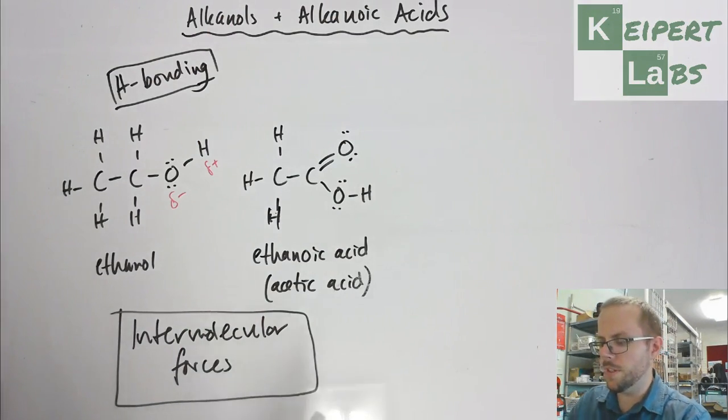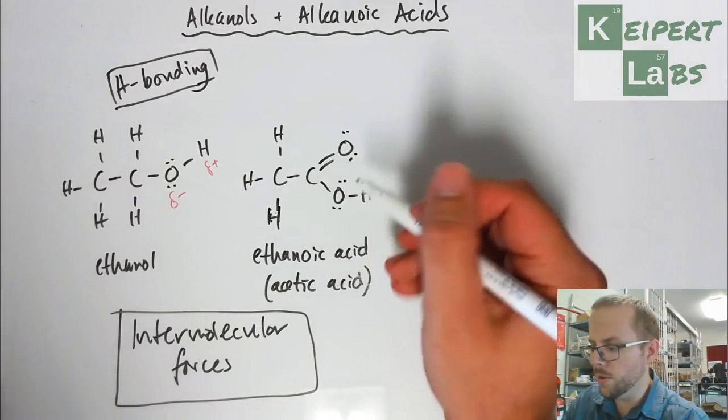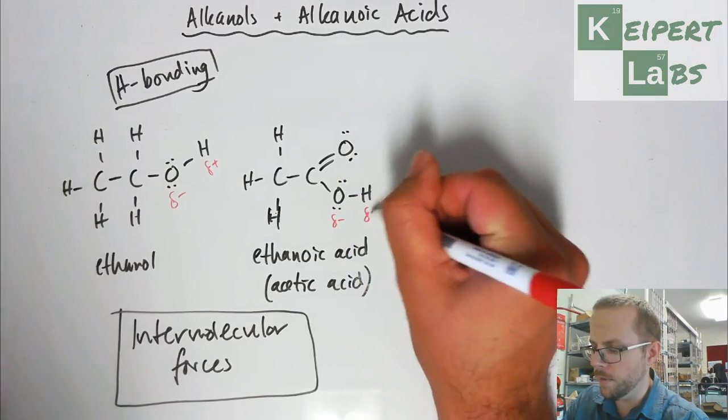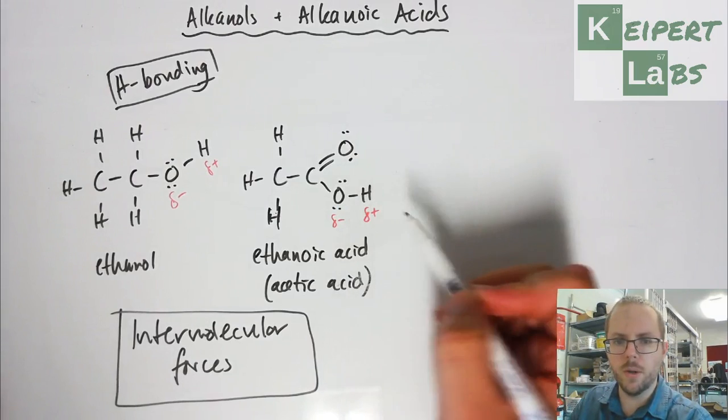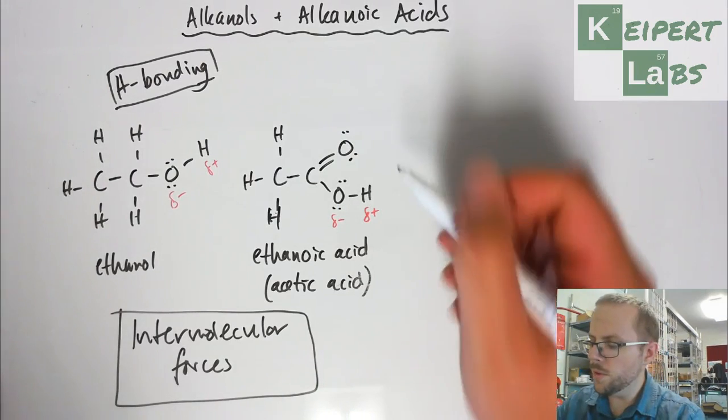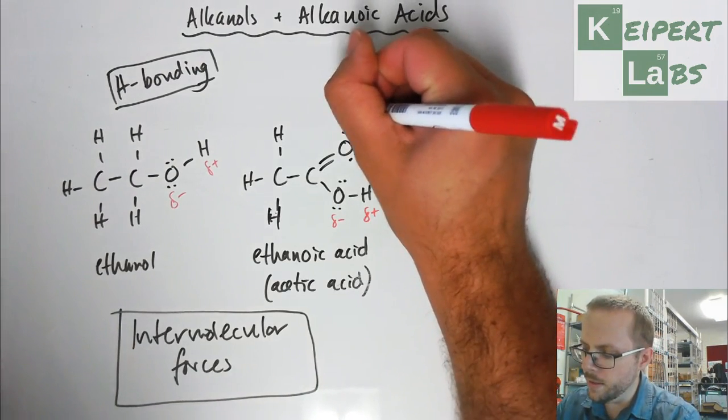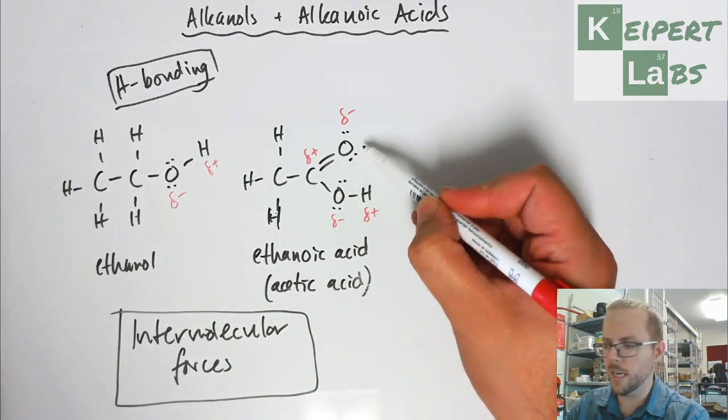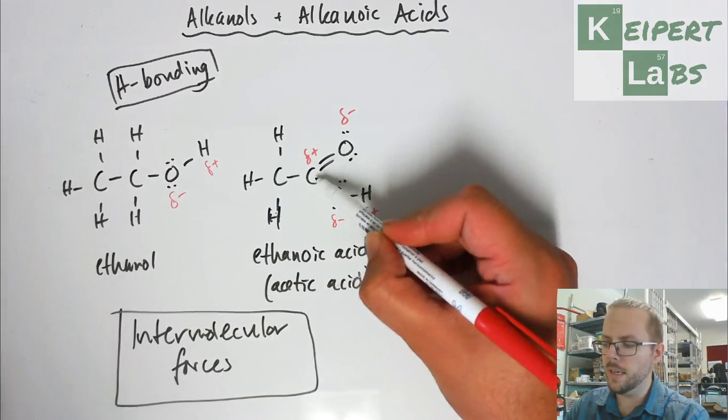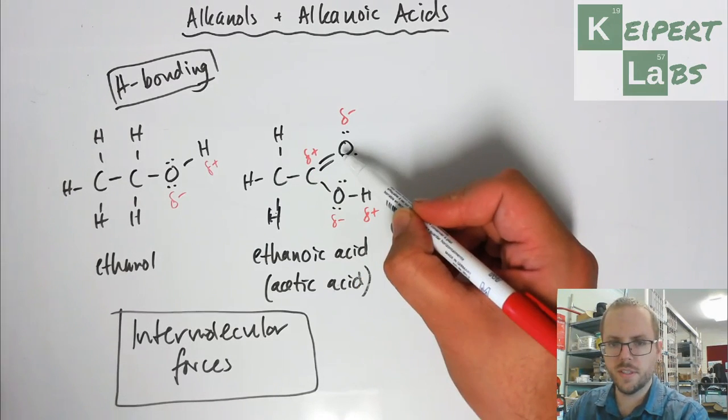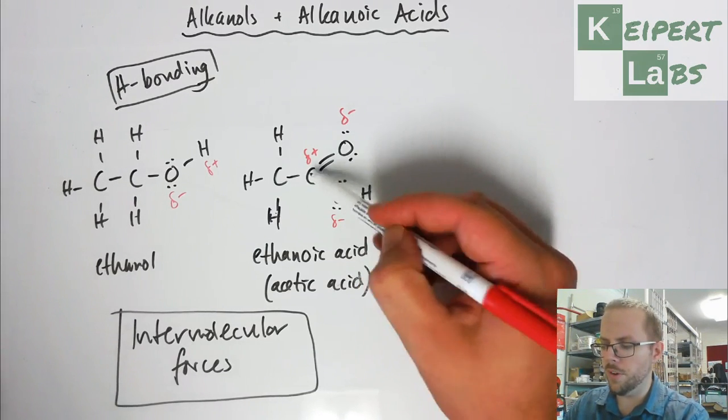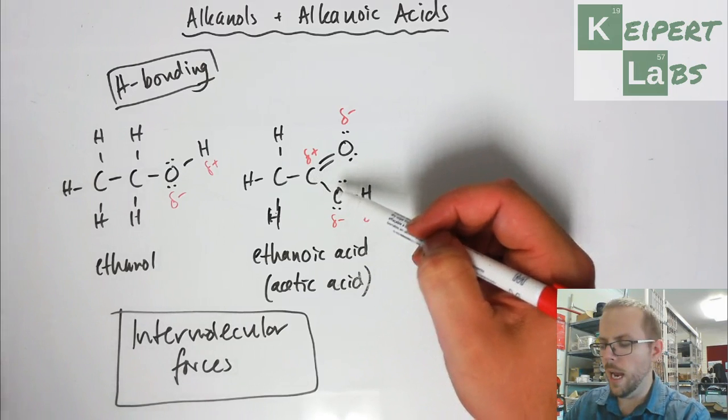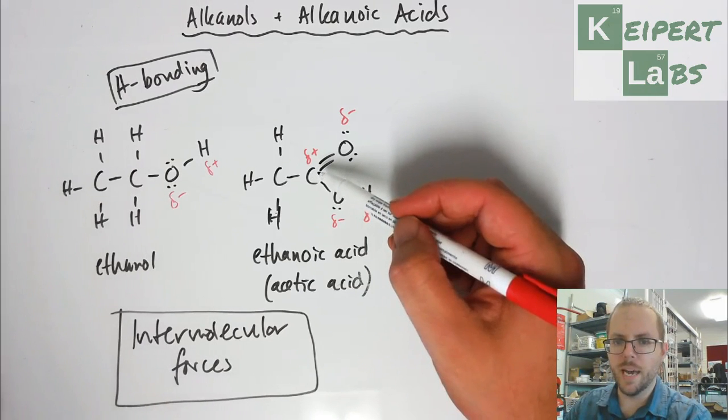What we notice is that this OH group over here also has the same behaviour. This bond over here is polar. Also what we notice is that this bond over here is polar because the oxygen is more electronegative than the carbon so it tends to pull electrons towards itself. In a single bond that difference is fairly small, not large enough to really have a noticeable impact.